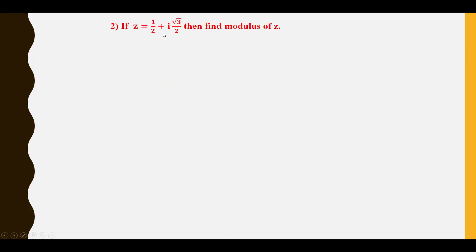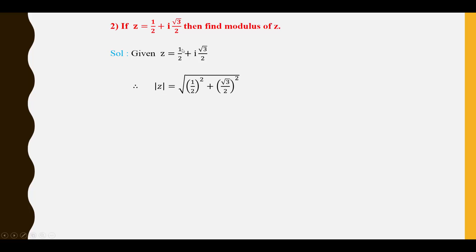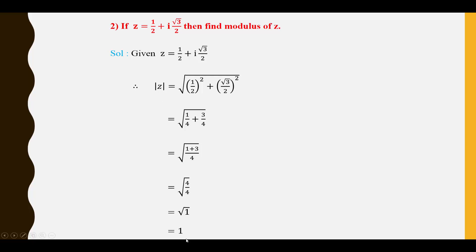Second question: If Z = 1/2 + i·(√3/2), find modulus of Z. Given Z = 1/2 + i·(√3/2), we use |Z| = √(real part² + imaginary part²). So |Z| = √((1/2)² + (√3/2)²) = √(1/4 + 3/4) = √(4/4) = √1 = 1. Therefore mod Z = 1.